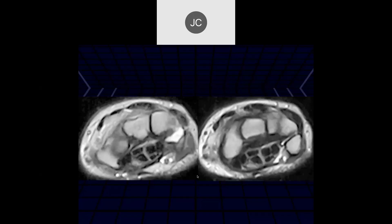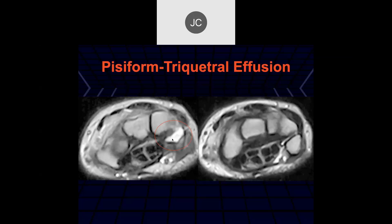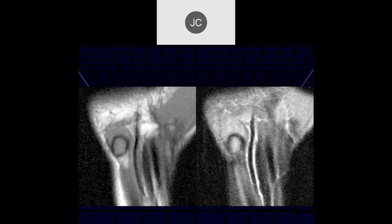Looking at this next image, Robert identifies it as a joint effusion at the pisiform-triquetrum joint. That's a triquetrum-pisiform effusion, and you can get a number of different pathologies in this joint, including rheumatoid arthritis and inflammatory disease. This was actually a batter who injured their hand.